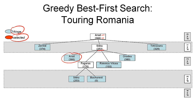We then select a node from the fringe, and the node with the lowest f value is Bucharest — this time the goal test passes, so the search is complete. We can extract the path to the goal node by tracing upward through the tree from the goal node to the initial state. This is our solution path. That's how greedy best first search works.